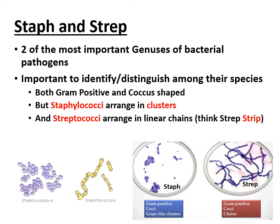Because of how common they are as pathogens, it's important to be able to identify and distinguish amongst them, since each genus has many different species. The main similarity is that they are both gram positive — if you were to do a gram stain, they would both appear purple, as you can see in both of these images.